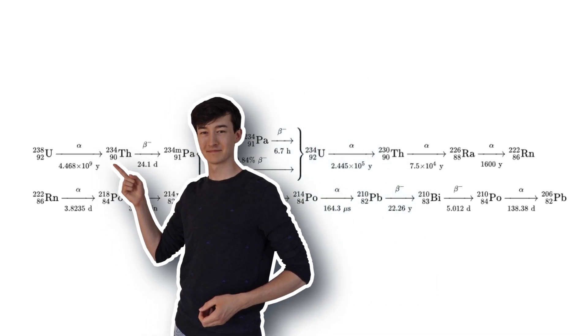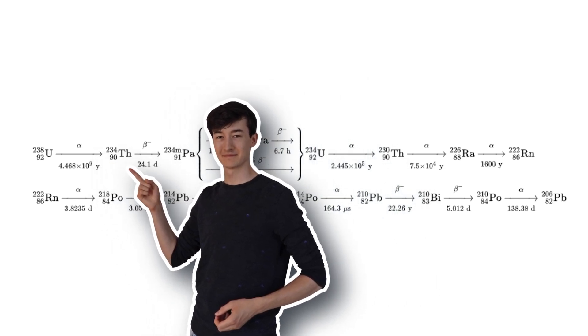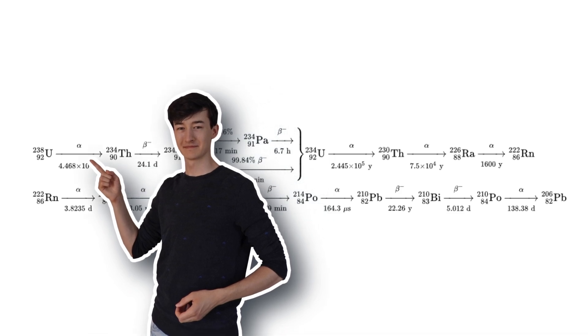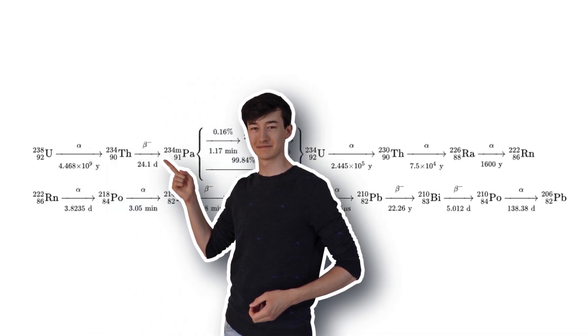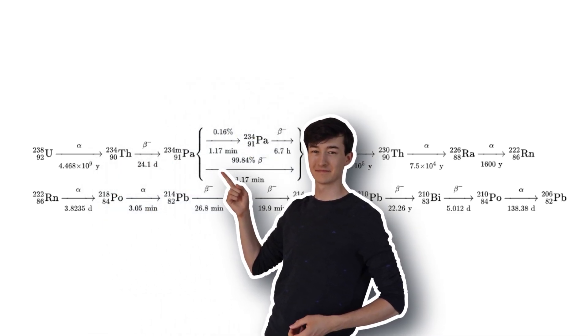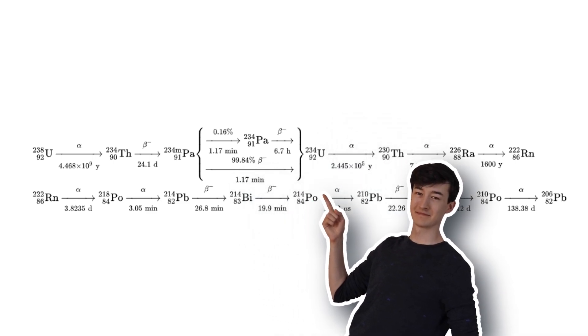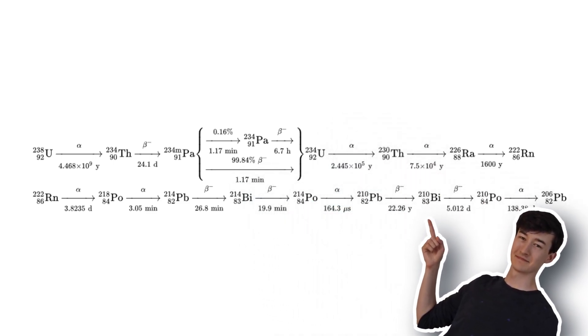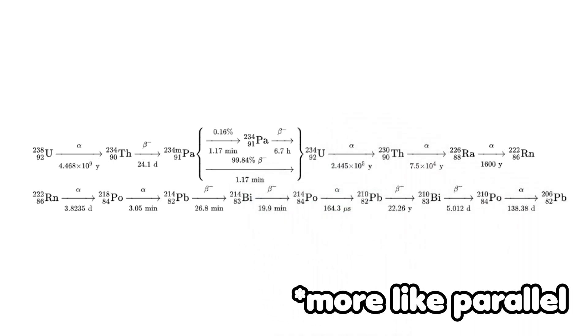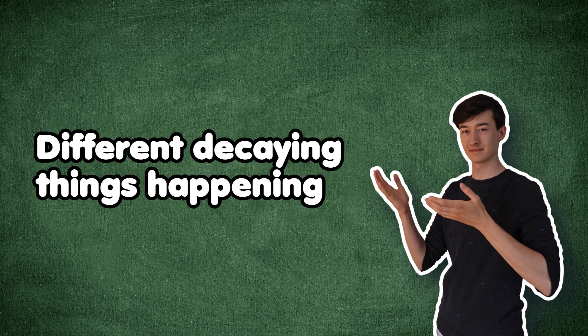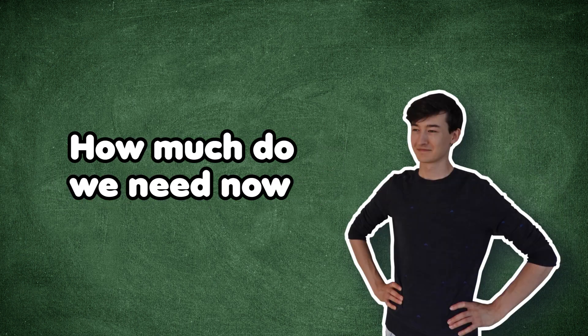When uranium-238 decays, it decays into thorium-234, helium and some energy. Thorium also decays in turn, and so do the products of that reaction. And this keeps going until the products are stable. All of these reactions are happening at the same time, so this results in a power output that is a few times higher than just the simple reaction shown before.